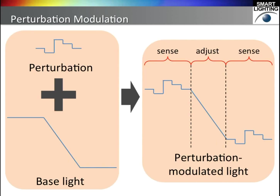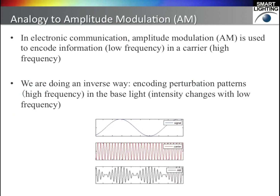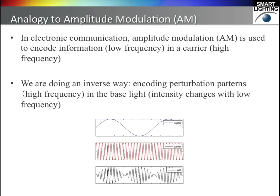This is the diagram of perturbation-modulated lighting. The base light is the light that we want to deliver to the room, and the perturbations are modulated to the base light. There are two stages: the sensing stage, where we add perturbations, and the adjustment stage, where we change the base light according to the occupancy. This diagram shows the two alternating stages — sensing and adjustment. There is an occupancy sensing module and a control strategy module. The occupancy sensing module determines what is in the room, and the control strategy module decides what light should be delivered.